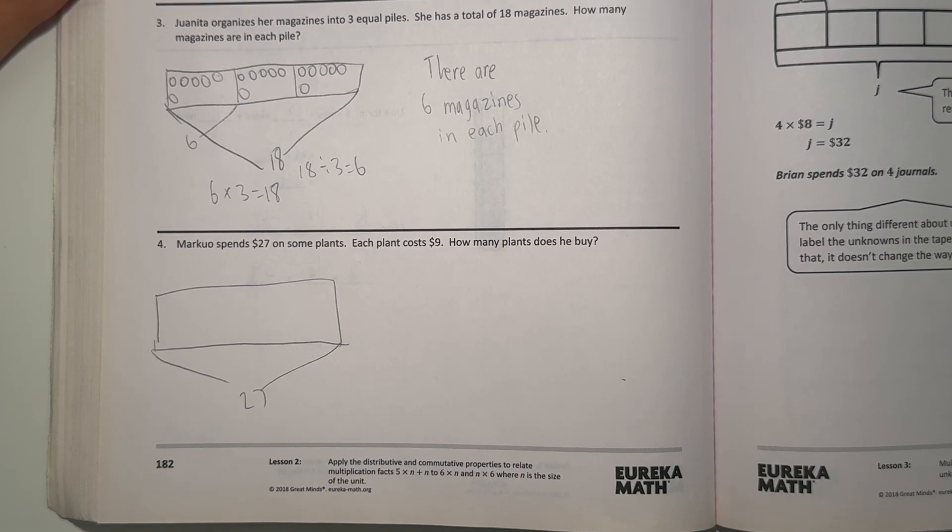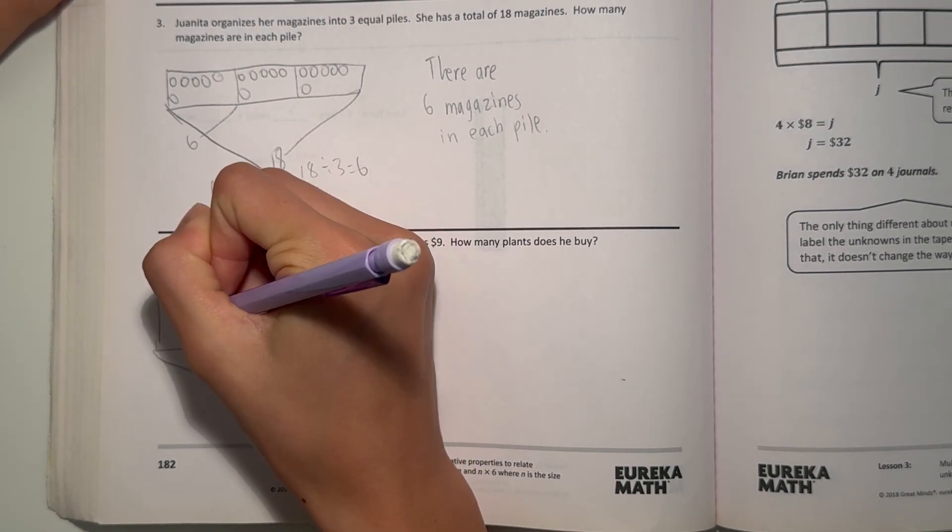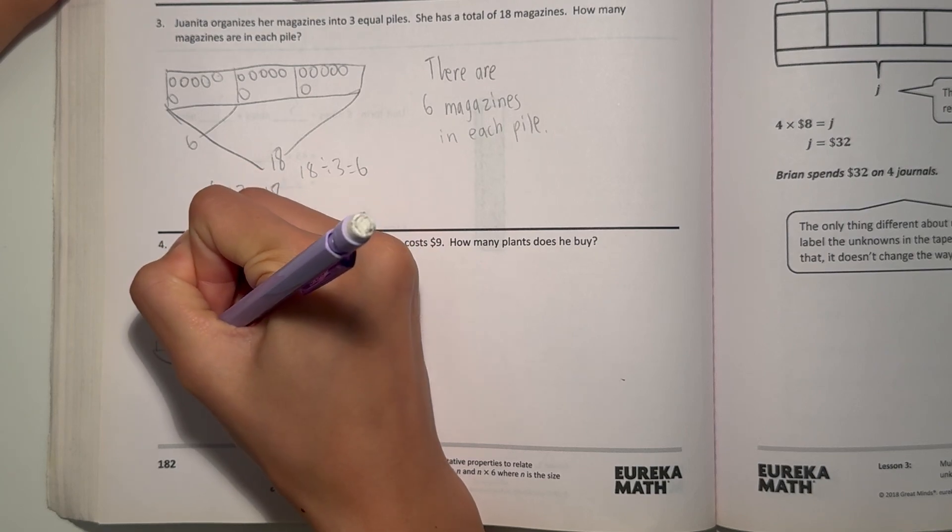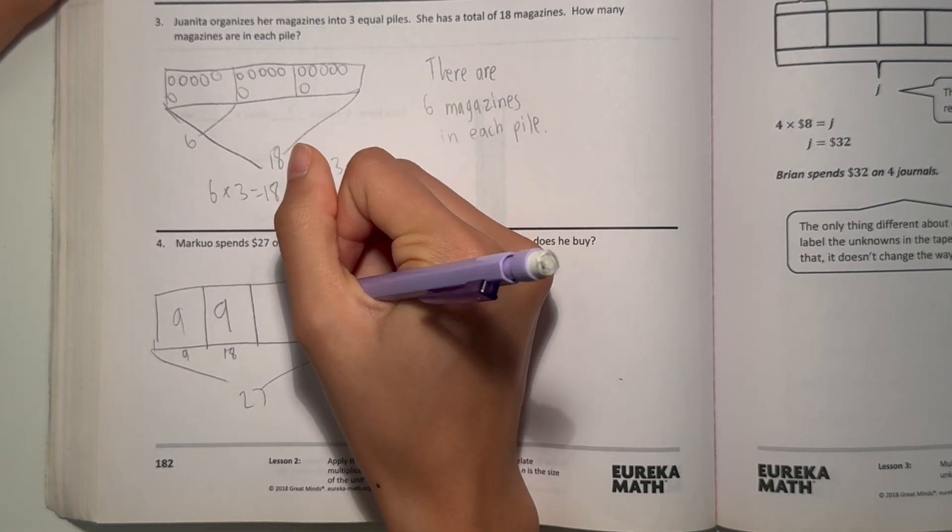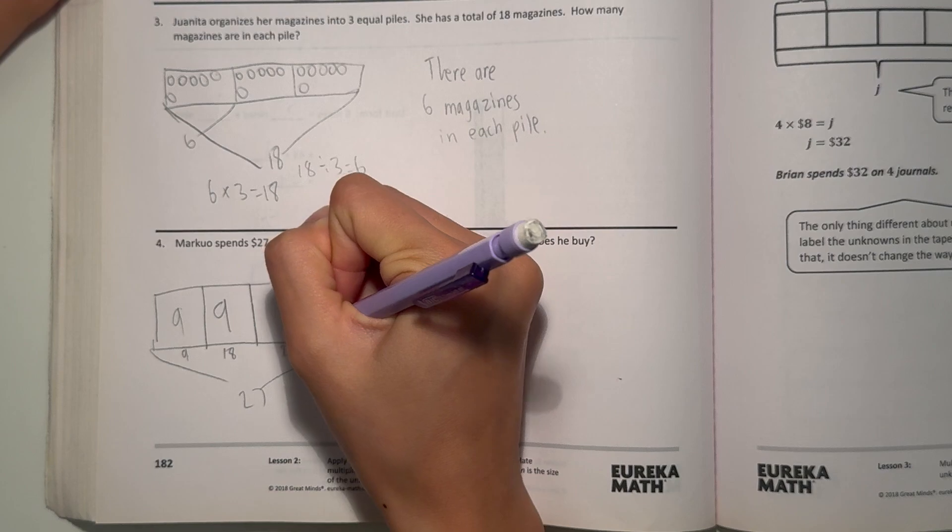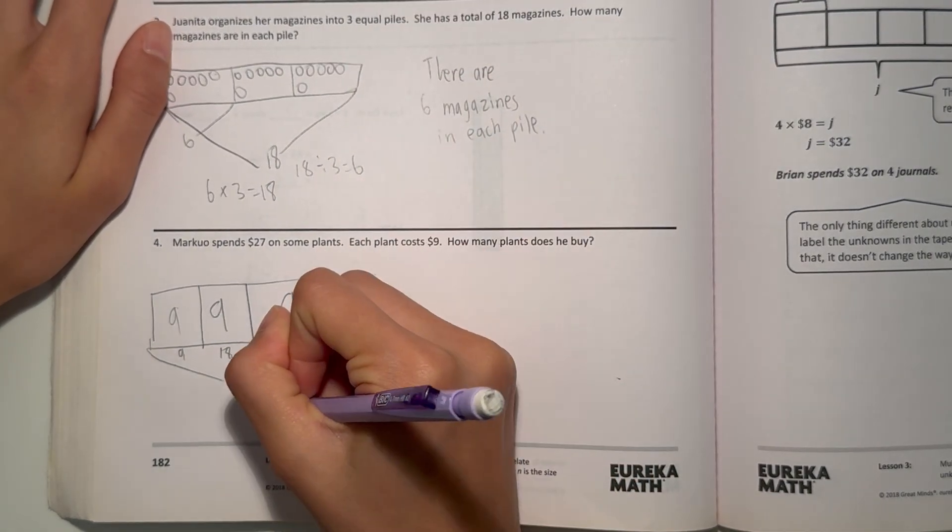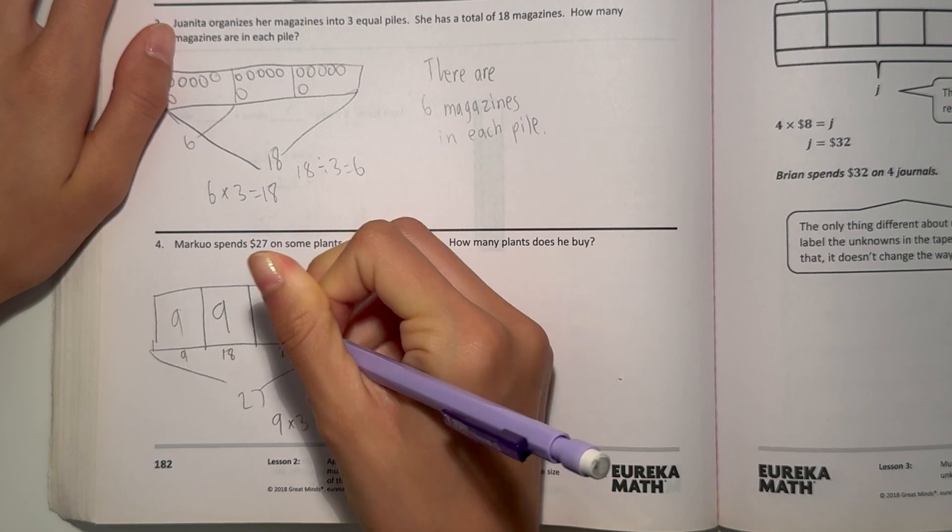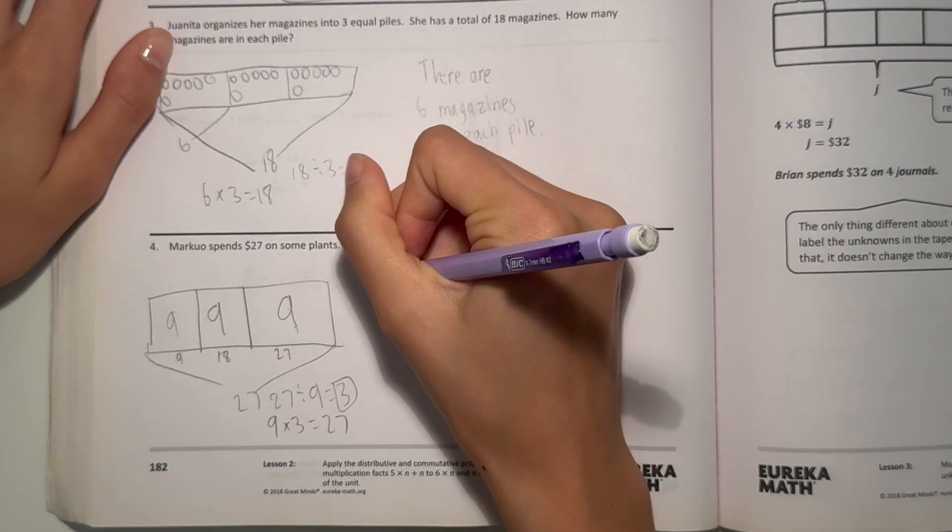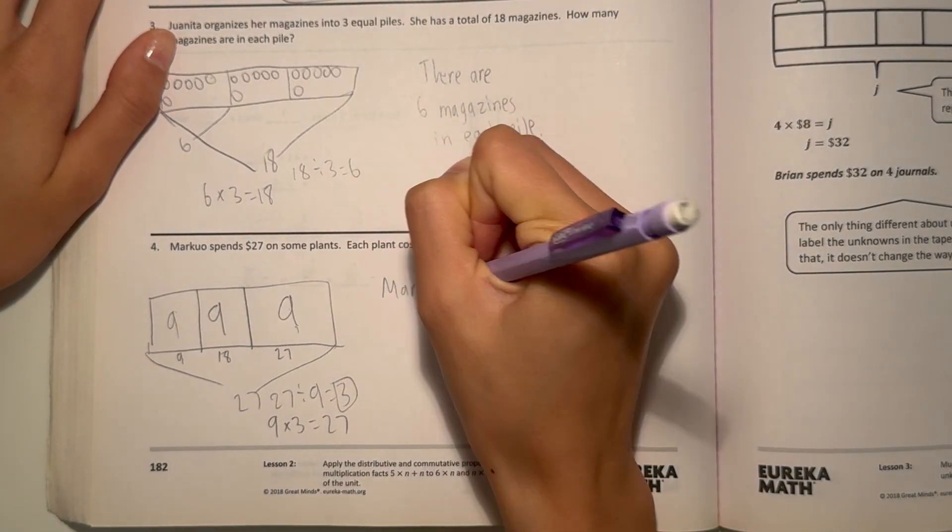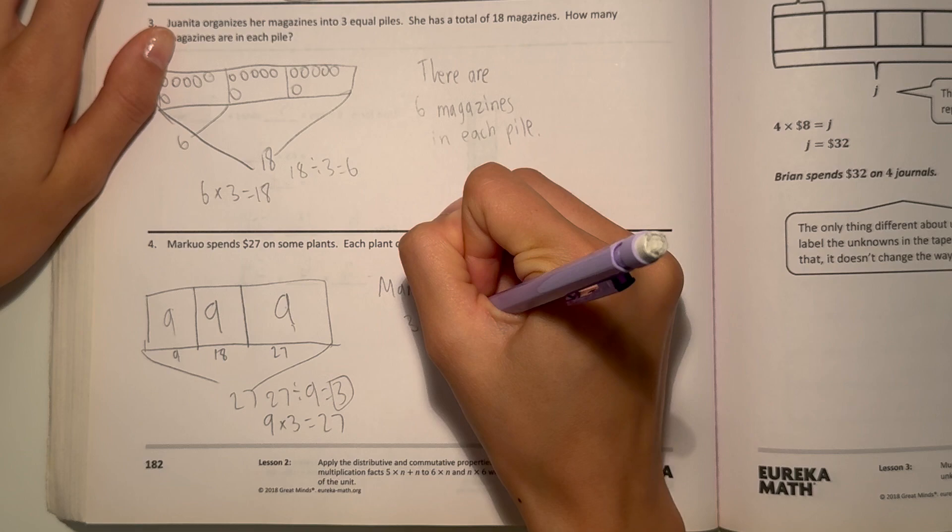So what we can do is keep on adding 9 until we reach 27. So we know this much is 9. Let's write 9 under here. And if we add another 9, then 9 plus 9, we have 18. And if we have another 9, 18 plus 9 is 27. And that's our total. So that means he bought 1, 2, 3 plants. So 9 times 3 equals 27. 27 divided by 9 equals 3. So Marco bought 3 plants.